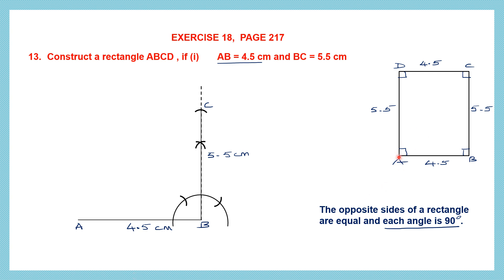Now we need to get the other sides. We need AD which is 5.5 centimeters. We can't simply draw an arc here, so from C we're going to draw 4.5 centimeters and from A we're going to get 5.5 centimeters — we will get two arcs. So we have one arc from A that is 5.5. Now from C we're going to cut this arc — we draw 4.5 centimeters and we have cut the arc. Now we have a point of intersection which we are going to name as D.